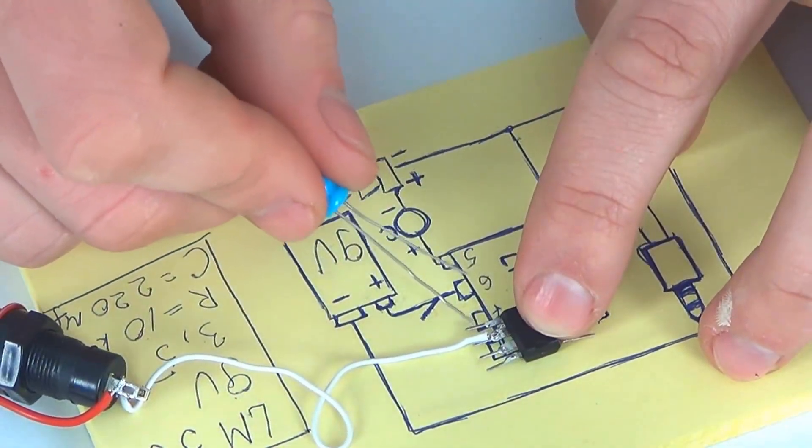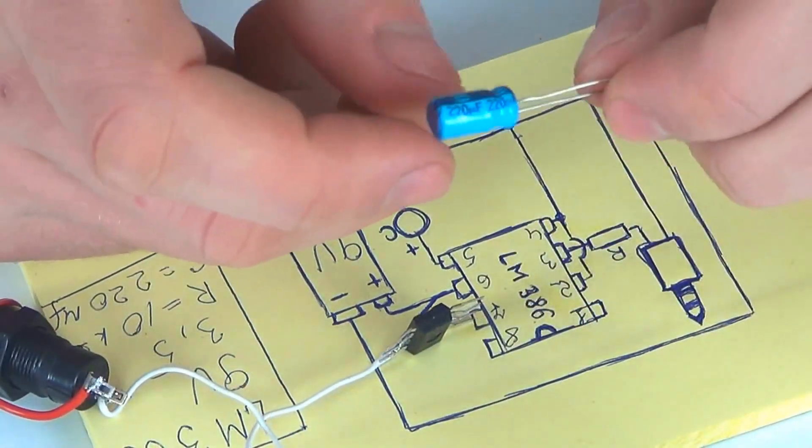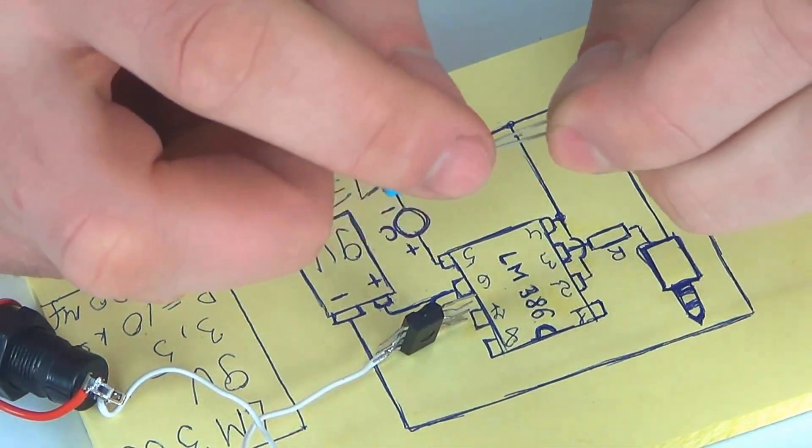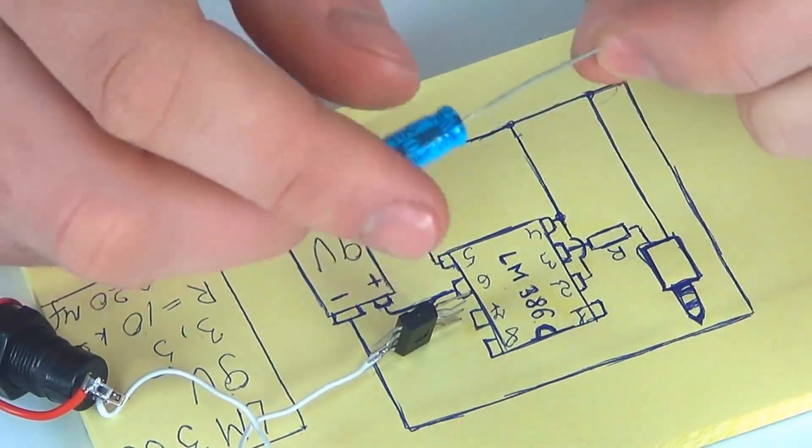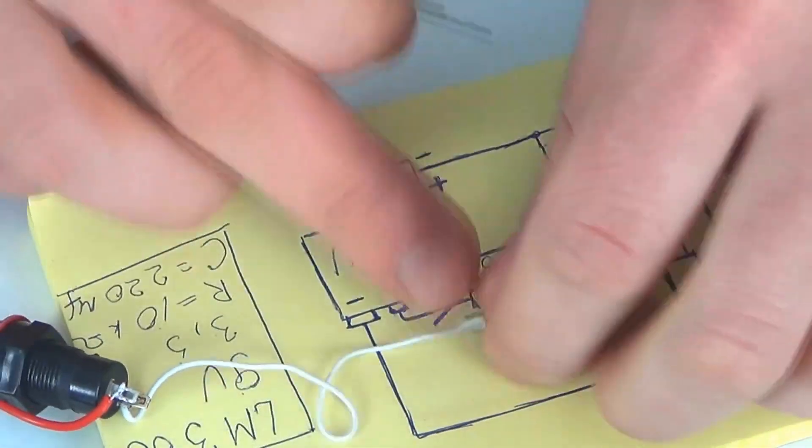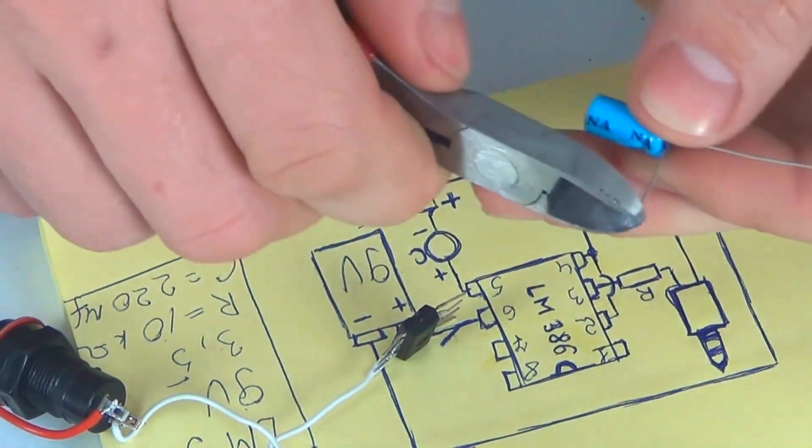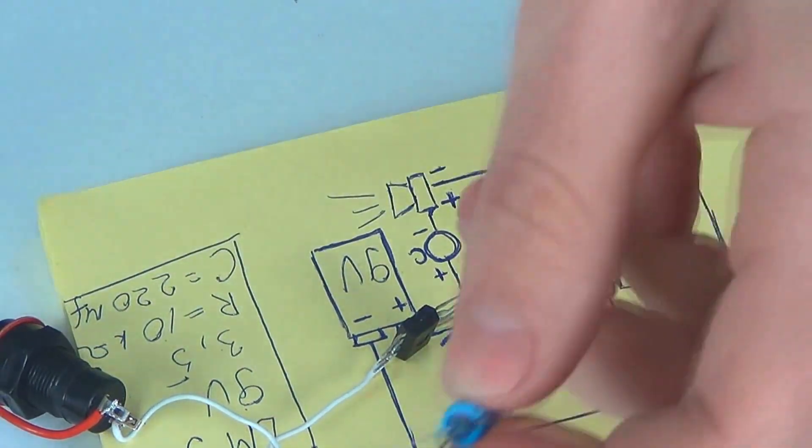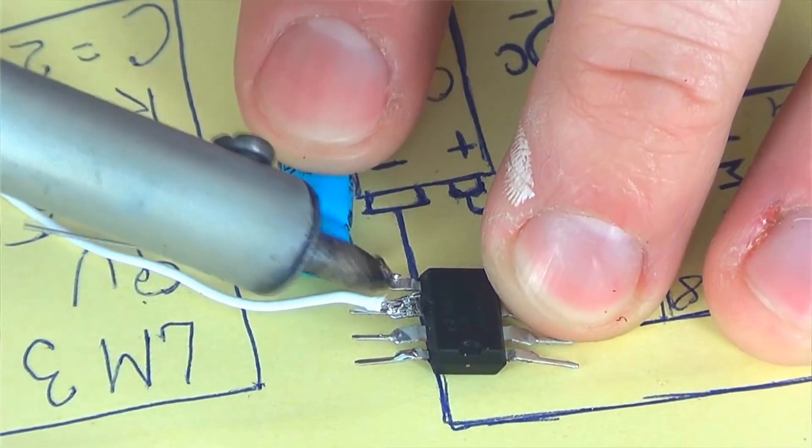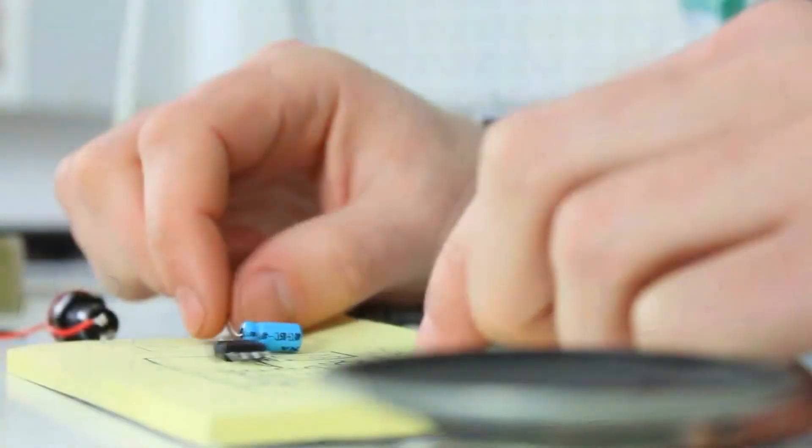Contact number 5, which is the last on the right, to it we link the condenser. The condenser has a plus and a minus. There's a zero on the black stripe, this is the minus, and the other side is the plus. According to the scheme, we connect the plus with the last contact on the right. I'm going to cut it down a bit. So, we have soldered the condenser.